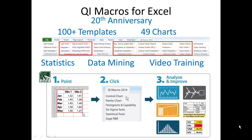Inside of the QI Macros, we have over 100 plus templates, 49 charts, statistics, data mining, video training, and it all works the same way, which makes it incredibly easy to learn. Everything works the same way: first you point, then you click, then you analyze and improve. Select some data, click a button, get a chart, get a statistic, and move on.